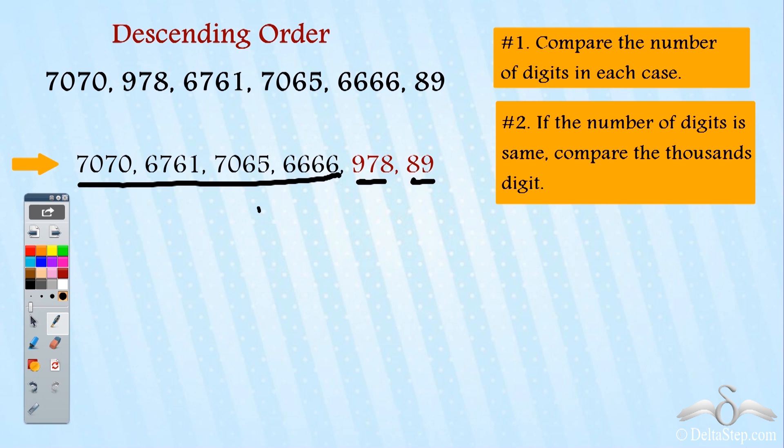Rule number two says if the number of digits is same, compare the thousands digit. In these numbers I have four digits in each. So I need to compare the thousands digit. Thousands digit is seven here, six here, seven here and six here. So the numbers starting with seven will be greater than the numbers starting with six.